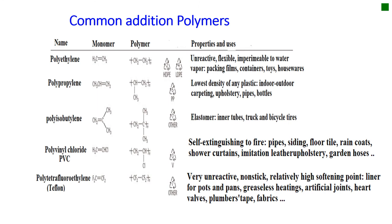Here we are going to look at common addition polymers, their properties and their uses. The first one is polyethylene. Polyethylene is formed from ethene, where the double bond opens and results in polyethylene — a saturated macromolecule. It is unreactive, flexible, and impermeable to water vapors. It is used as packing films, containers, toys for kids, and housewares.